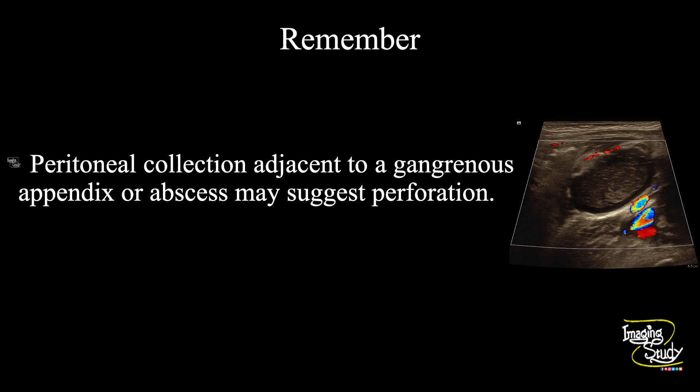Now the take-home message: whenever you diagnose a case of gangrenous appendicitis or appendicular abscess, you should look for adjacent peritoneal collection. If you see peritoneal collection, then suspect perforation in that case.